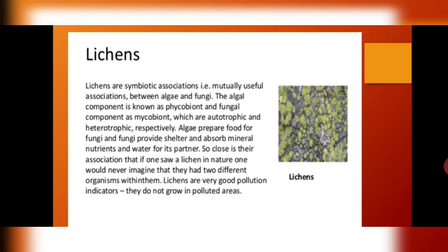Lichens represent a symbiotic relationship between fungi and algae — a mutually useful association. The algal component is known as the phycobiont and the fungal component is called the mycobiont. One is autotrophic and one is heterotrophic. The algae prepares food and supplies it to the fungi. The fungi in turn absorbs water and various nutrients from the soil and provides them to the algae. Lichens are a very good pollution indicator — they grow only in unpolluted areas, so if there are no lichens, that area is polluted.